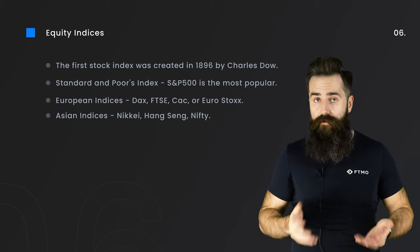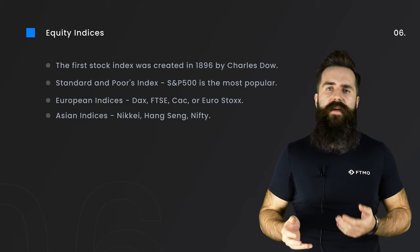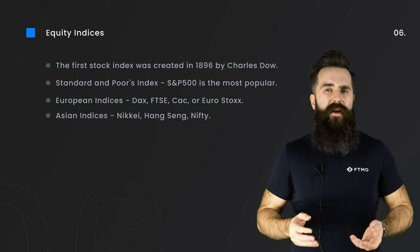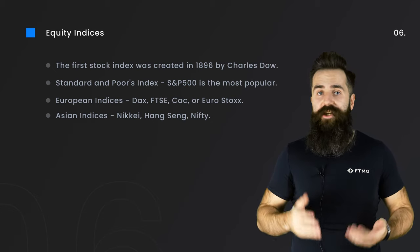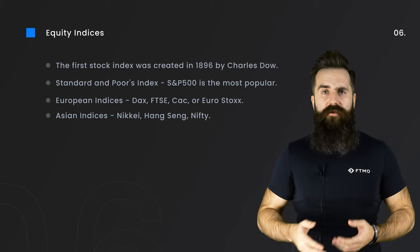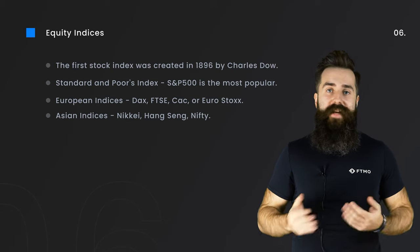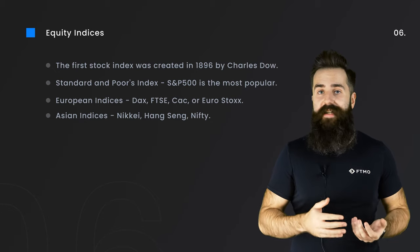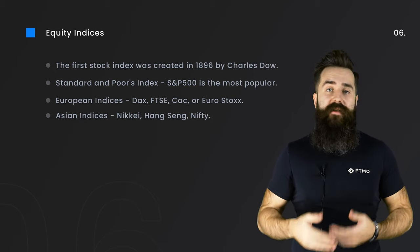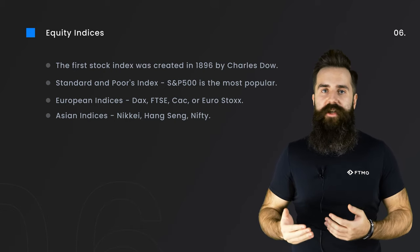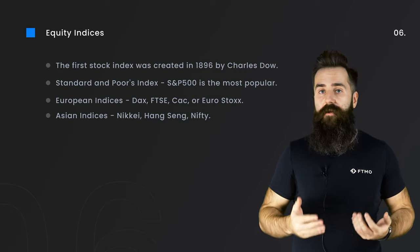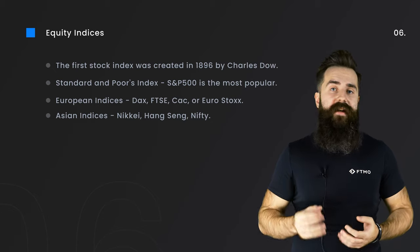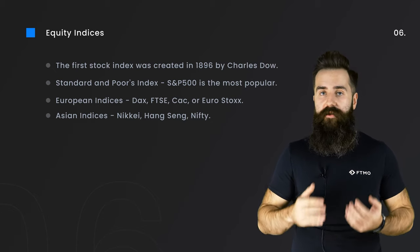In Asia, trading indices is also very popular, though perhaps heard about a little less compared to US and European markets. They can still bring great opportunities not only for traders based in Asia but also for those in Europe or the US who want to trade during unusual hours due to their day job or other obligations. Popular Asian indices include the Nikkei 225, which contains 225 stocks traded at the Tokyo Stock Exchange; Hang Seng 50, which contains 50 companies traded at the Hong Kong Stock Exchange; and the Nifty 50, which contains the 50 largest companies traded on the National Stock Exchange in India.